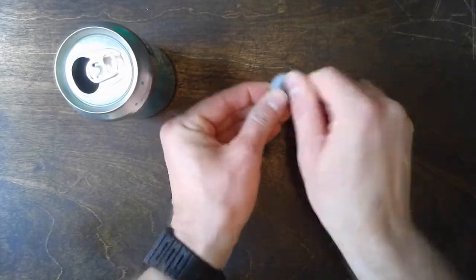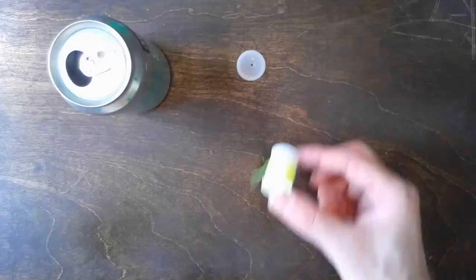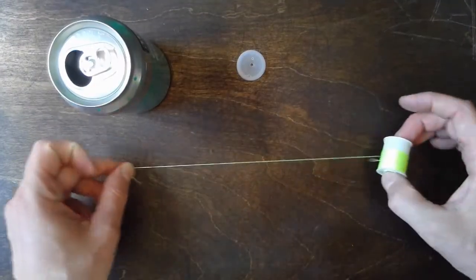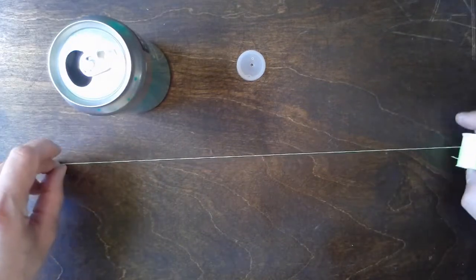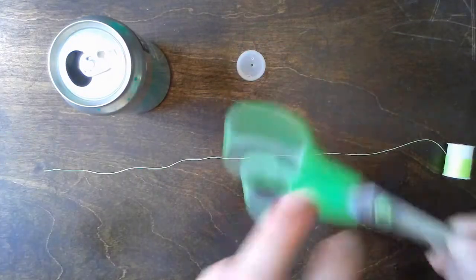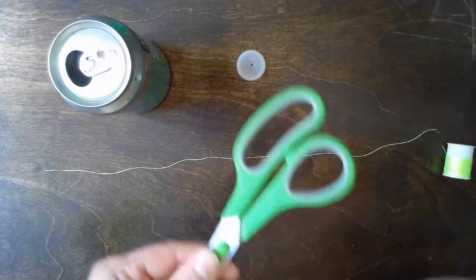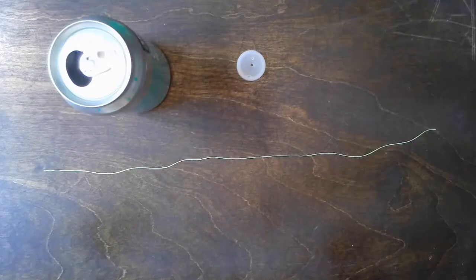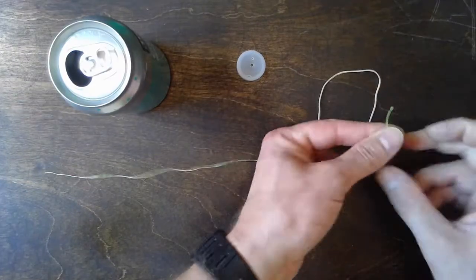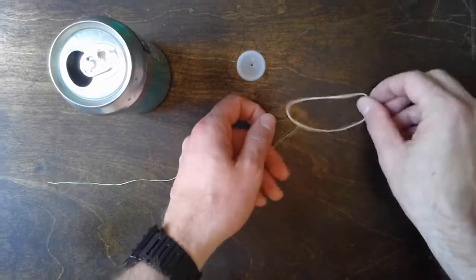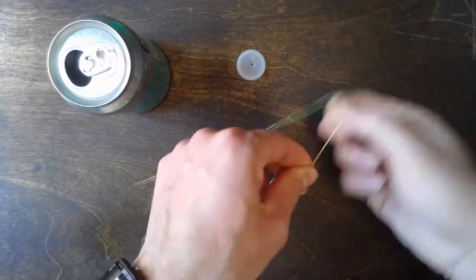Get your spool of sewing thread and unravel about a foot, then trim it with the scissors. Grab your thin rubber band and tie that sewing thread onto the end of the rubber band. Make a nice strong knot, just like that.